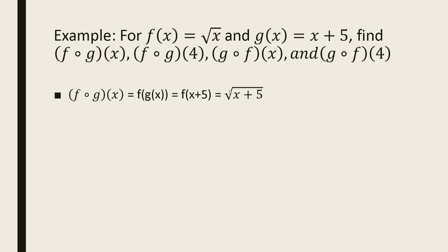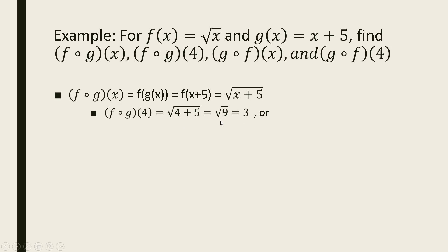Let's start with f(g(x)). Since g(x) is x plus 5, we plug x plus 5 into our f function. Wherever we see x in f(x), we plug in x plus 5, giving us the square root of (x plus 5). For f(g(4)), we plug 4 in to get the square root of (4 plus 5), which is the square root of 9, which equals 3.